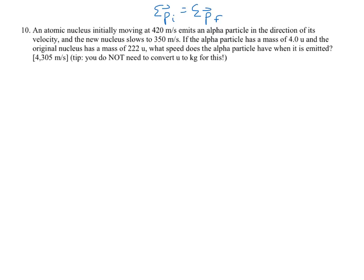So let me draw this out. We have an atomic nucleus — sometimes atoms can be stripped of their electrons and just be nuclei floating around. So it's moving this way, and inside of it it has an alpha particle, a smaller particle. That whole system is moving at 420 meters per second. So initial velocity of the system equals 420 meters per second.